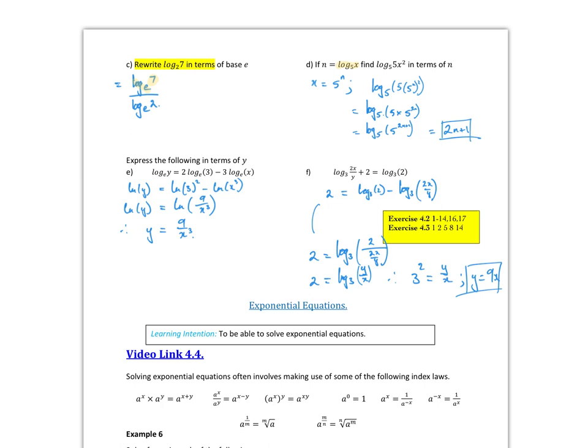So now, there's my x term, so if I just substitute that in there for the x, I end up with 5 times 5 to the n all squared, which is 5 times 5 to the 2n, using my indice laws.